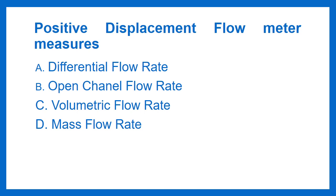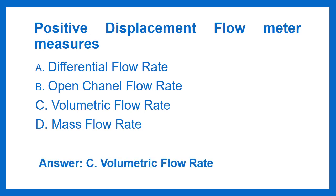Positive Displacement Flow Meter measures: Option A - Differential Flow Rate, Option B - Open Channel Flow Rate, Option C - Volumetric Flow Rate, Option D - Mass Flow Rate. The answer is Option C: Volumetric Flow Rate.